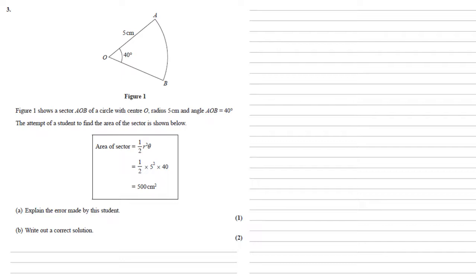We need to explain the error made by this student. So they've used the formula area of sector equals half R squared theta. This only works with radians, whereas we can see they've used degrees in the middle.